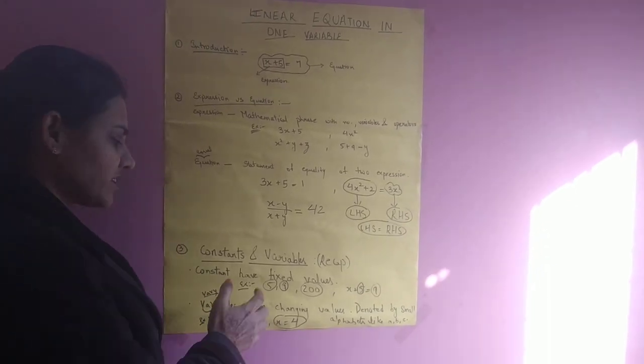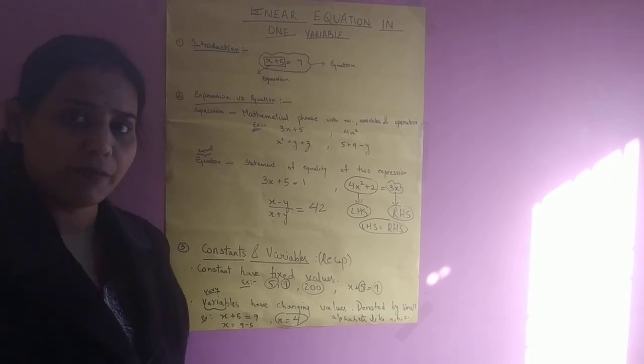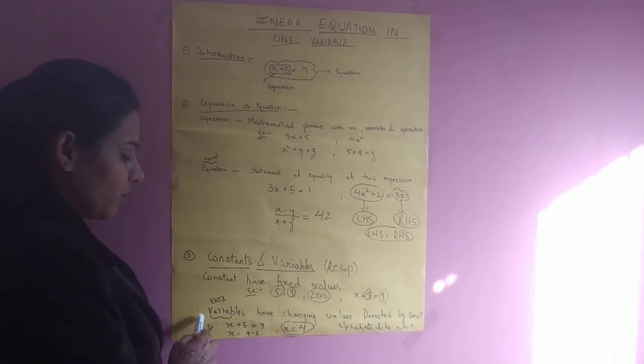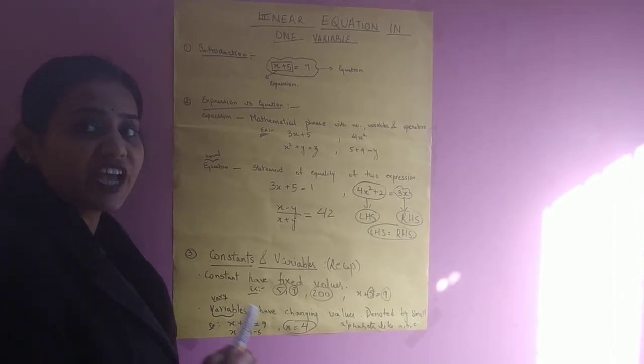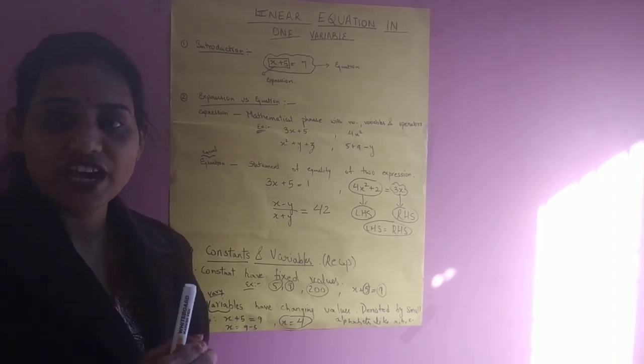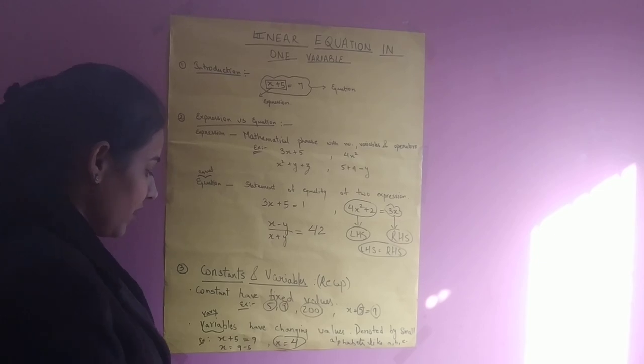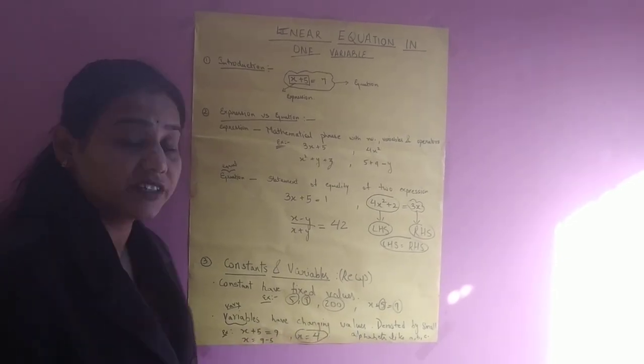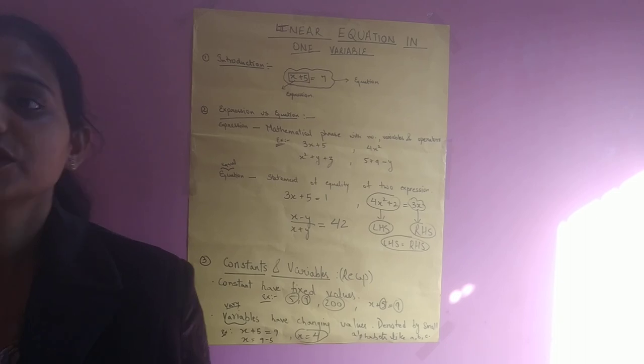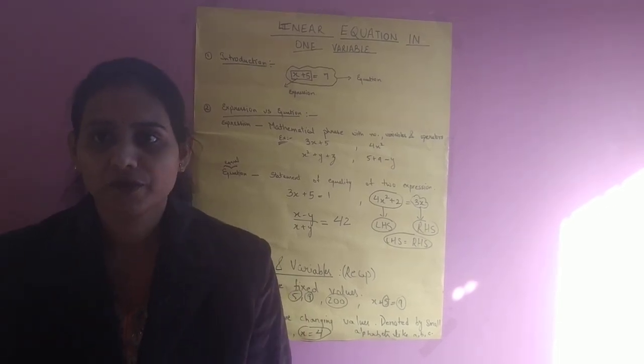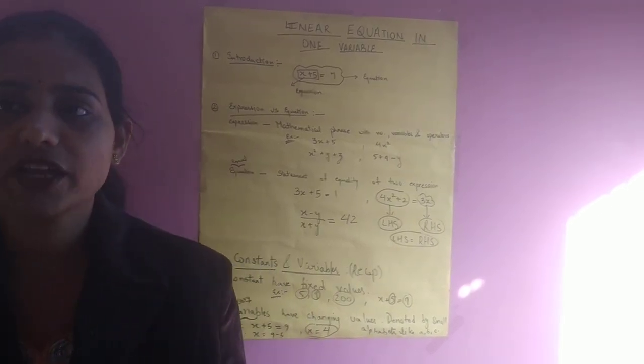Now what is the difference between a constant and a variable? Variables which can vary from one form. Variables have changing values. It is denoted by letters, small alphabets.